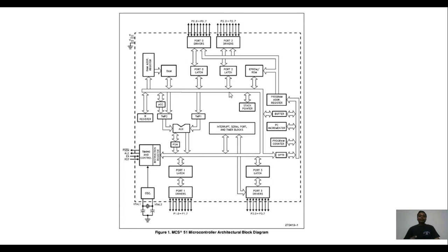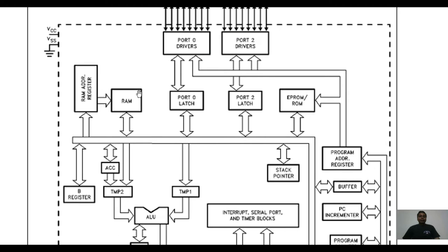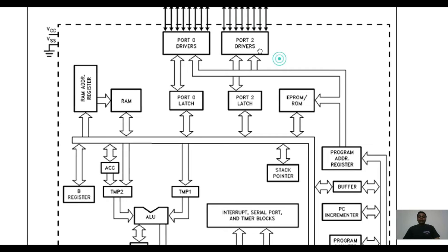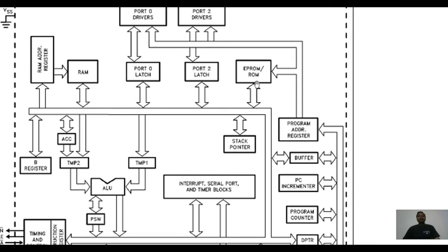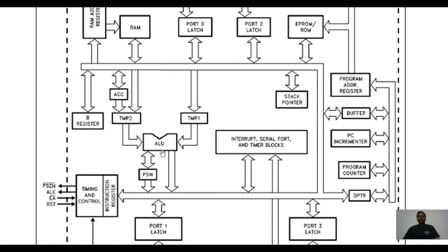The internal architecture shows the detailed blocks present in 8051. We have RAM, which is a temporary data memory of 128 bytes. We have port latches to store values available on port pins, and drivers for interfacing external peripherals. There is ROM memory — the program or code memory — with a capacity of 4 kilobytes. We also have various registers and the ALU, which performs arithmetic and logical operations.